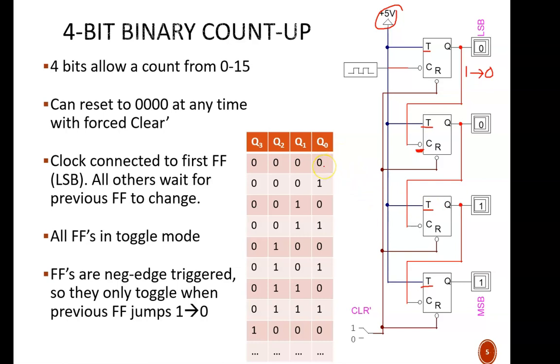Q0 toggles between every single row: 0, 1, 0, 1, and so on. That's why this top flip-flop toggles on every single clock cycle.